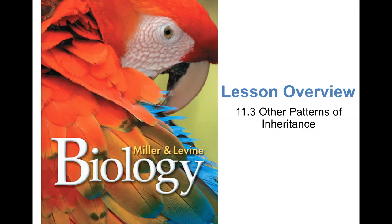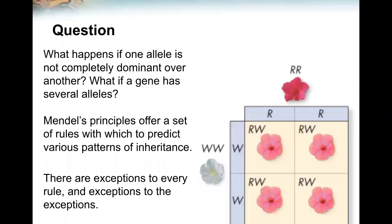Other Patterns of Inheritance. What happens if one allele is not completely dominant over another? What if a gene has several alleles? Mendel's principles offer a set of rules with which to predict various patterns of inheritance. There are exceptions to every rule, and exceptions to the exceptions.